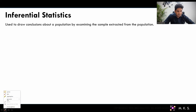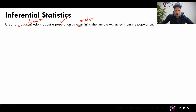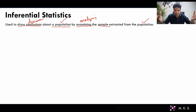In inferential statistics, we draw conclusions or make some kind of decisions about the population — this is the most important part — we are going to draw conclusions about the population, not about the sample, by examining or analyzing the sample extracted from the population. So we are going to make decisions about the population by analyzing the sample which we have extracted from the population itself.